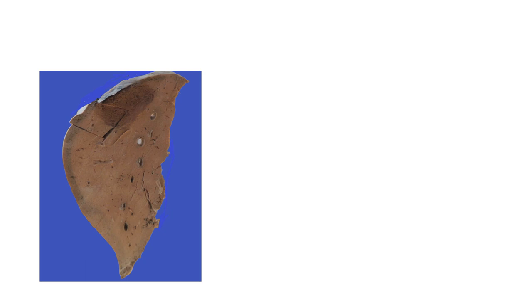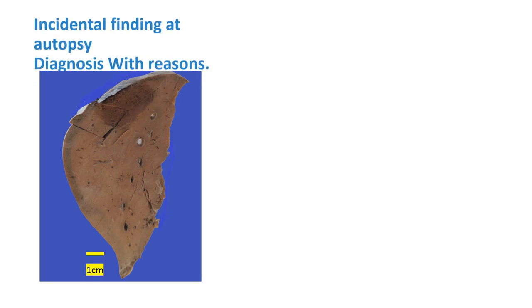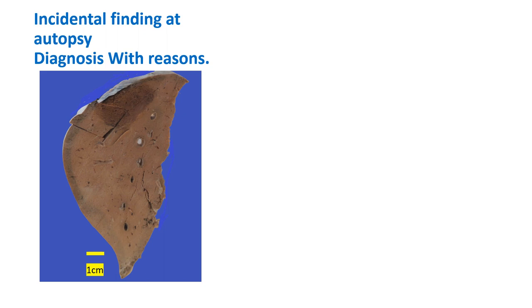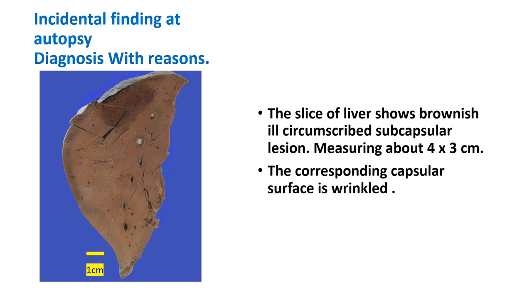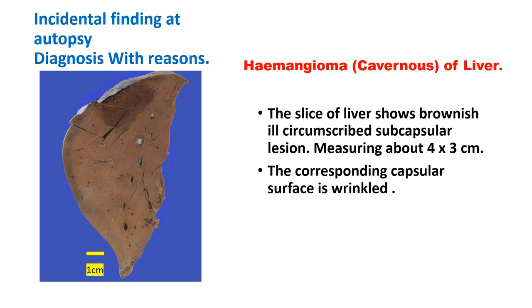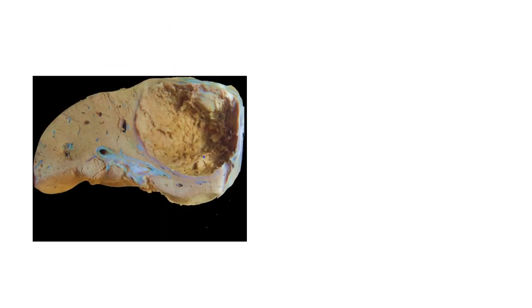One more interesting specimen you may encounter in some lab museums. This is an incidental finding at autopsy — the slice of liver shows a brownish ill-circumscribed subcapsular lesion about four by three centimeters. The corresponding capsule also shows dark coloration and is wrinkled. This is a classic case of hemangioma, and these incidental hemangiomas in the liver are often of the cavernous type.